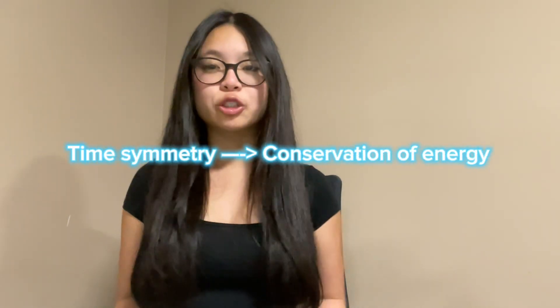Time symmetry states that when we apply shifts or changes in time, the laws of physics remain unchanged. This means that the behavior of physical systems should be the same at different moments in time, and that the laws of physics do not depend on the specific moment in time that they were applied. This time symmetry leads us to the conservation of energy. The conservation of energy states that the total amount of energy in an isolated system remains constant over time — energy can neither be created nor destroyed, only transferred into different forms. This implies that energy remains conserved and constant throughout a system's evolution, and should not depend on the specific moment in time that measurements were made.